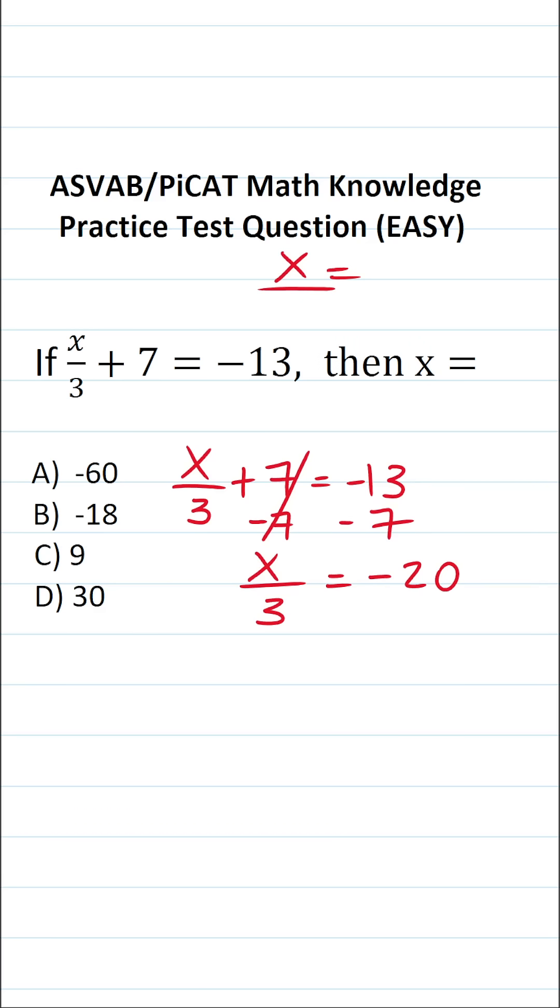To clear this 3 that's below the x we're going to multiply both sides of this equation by 3. This crosses out here leaving you with just x over here.